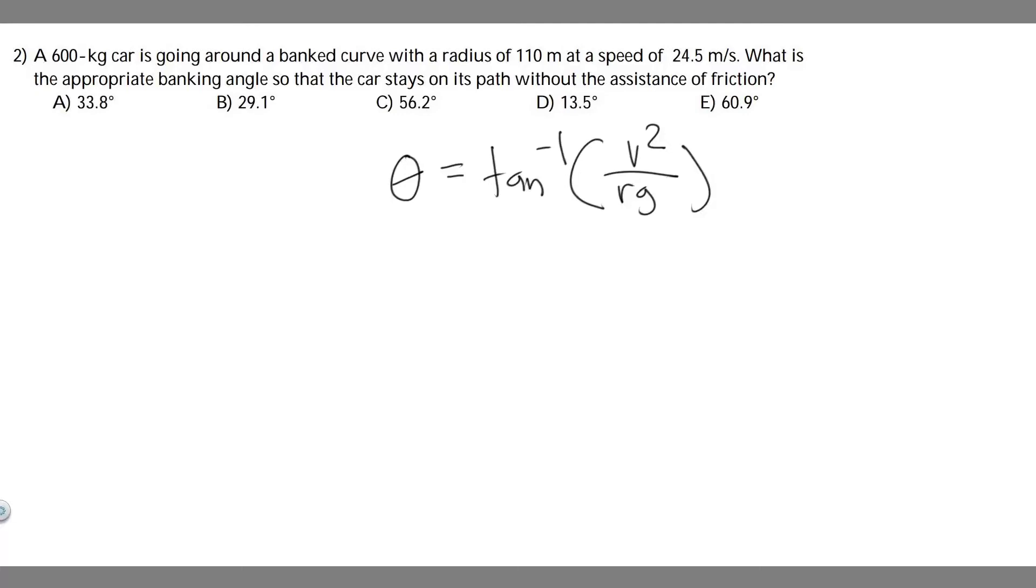In this problem, we're told a 600kg car is going around a banked curve with a radius of 110 meters at a speed of 24.5 meters per second. What is the appropriate banking angle so the car stays on its path without the assistance of friction?